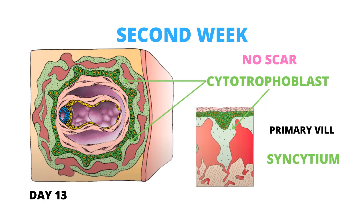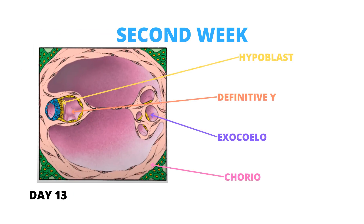The cytotrophoblast cells show local proliferation and penetrate the syncytiotrophoblast to organize cell columns encircled by syncytium. These cell columns with their syncytial sheath are known as primary villi. Additional cells produced in the hypoblast migrate along the interior of the exocelomic membrane, proliferate, and give rise to a new cavity within the exocelomic cavity. This new space is known as the secondary yolk sac or definitive yolk sac, which is much smaller than the primitive yolk sac. During its formation, large portions are shed into the chorionic cavity and are called exocelomic cysts.